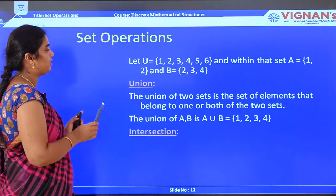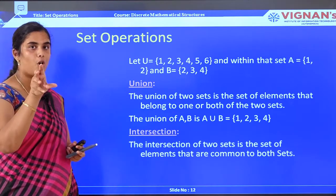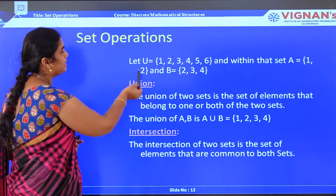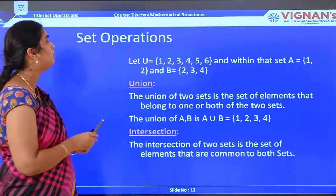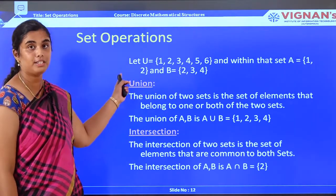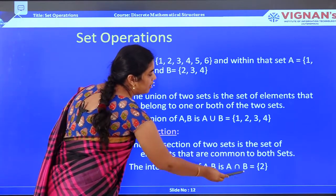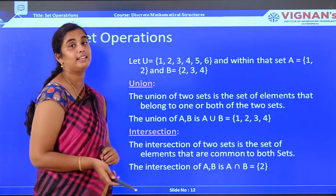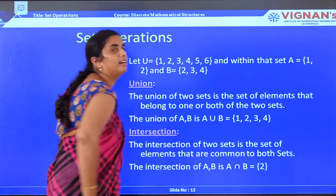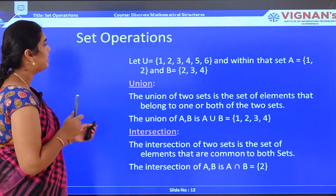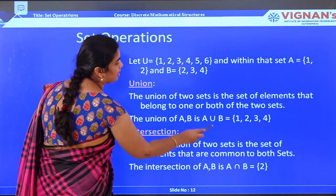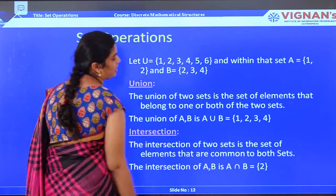Next comes the intersection operation. Intersection takes only the common elements. Given A = {1, 2} and B = {2, 3, 4}, the intersection A ∩ B = {2}, since 2 is the only common element. The result here is a singleton set, as it contains only one element. These are the symbols used to represent union (∪) and intersection (∩).